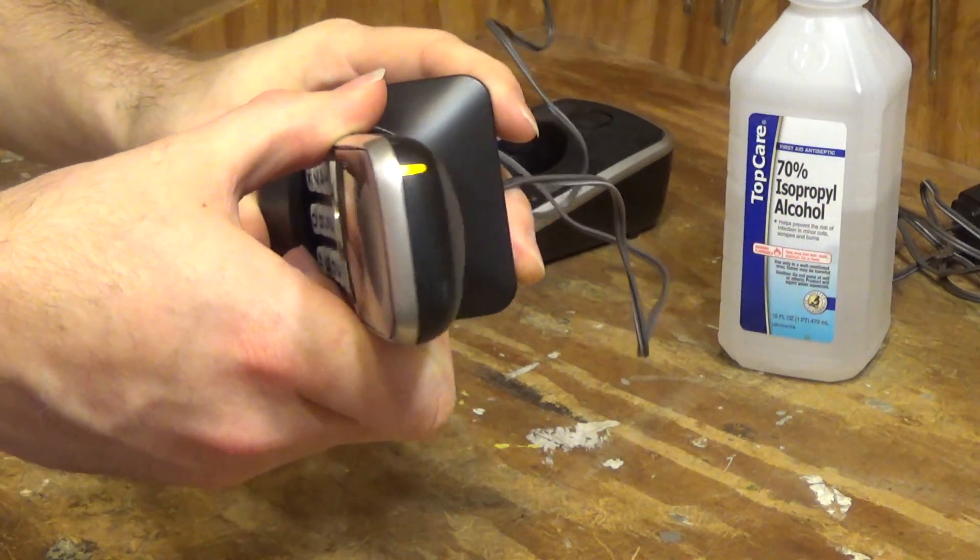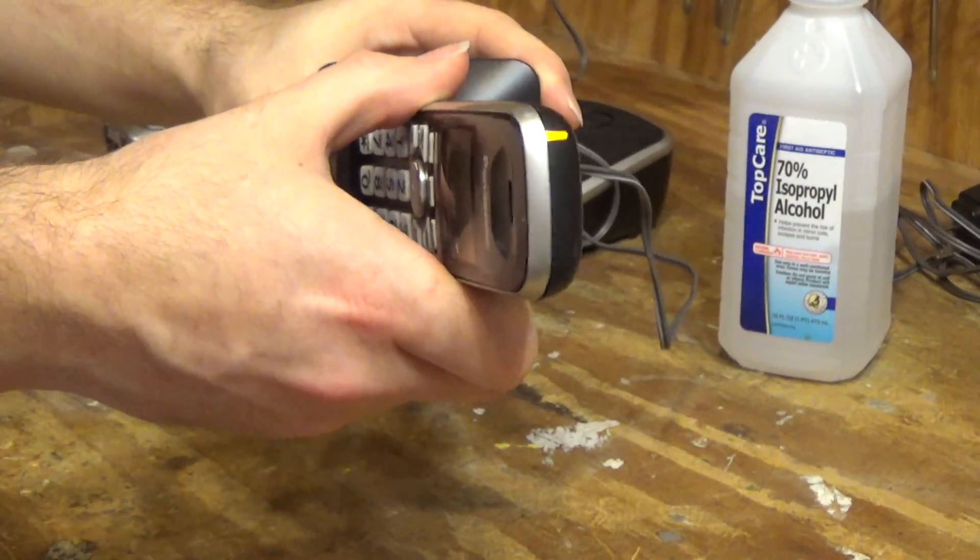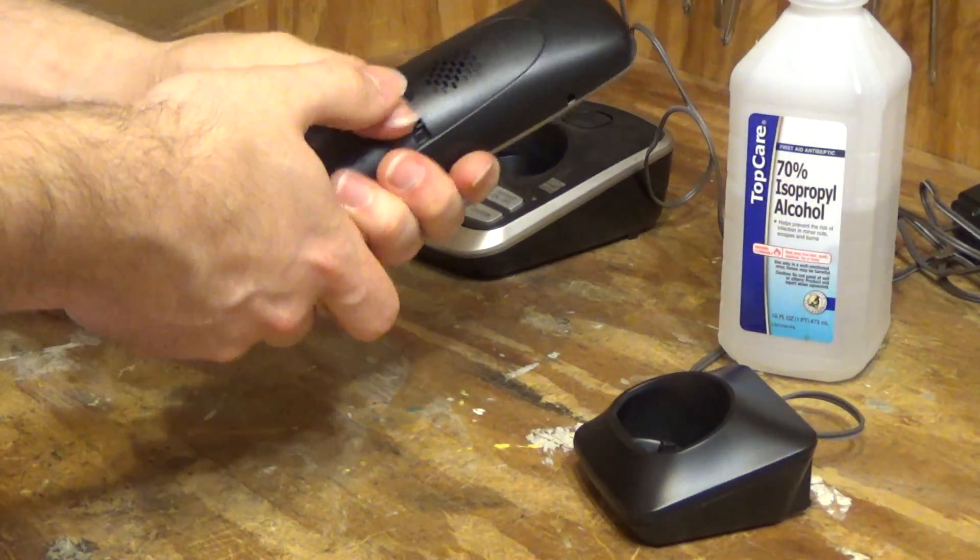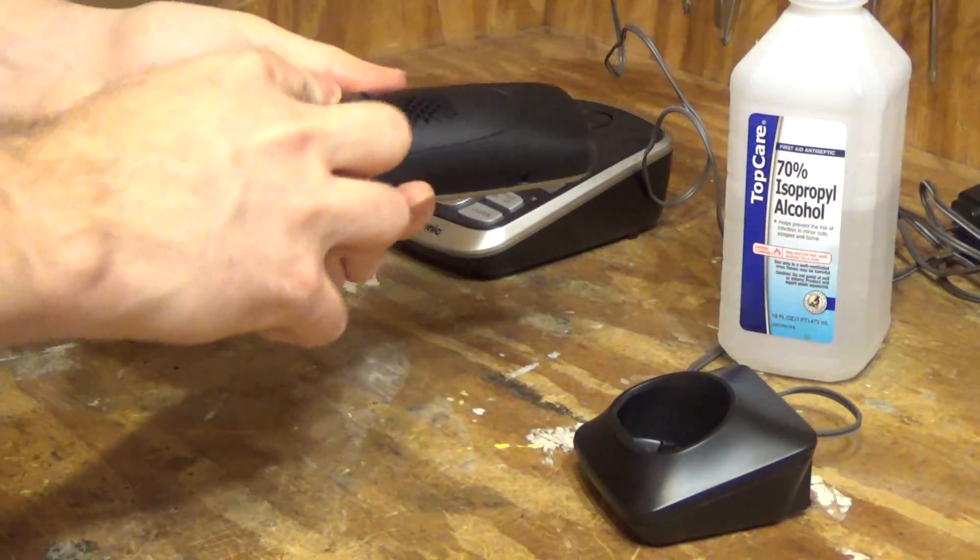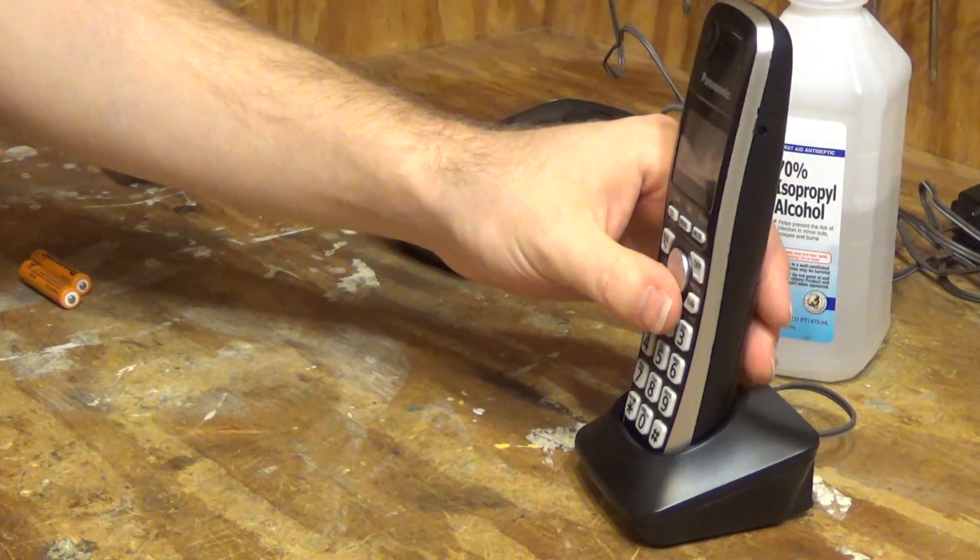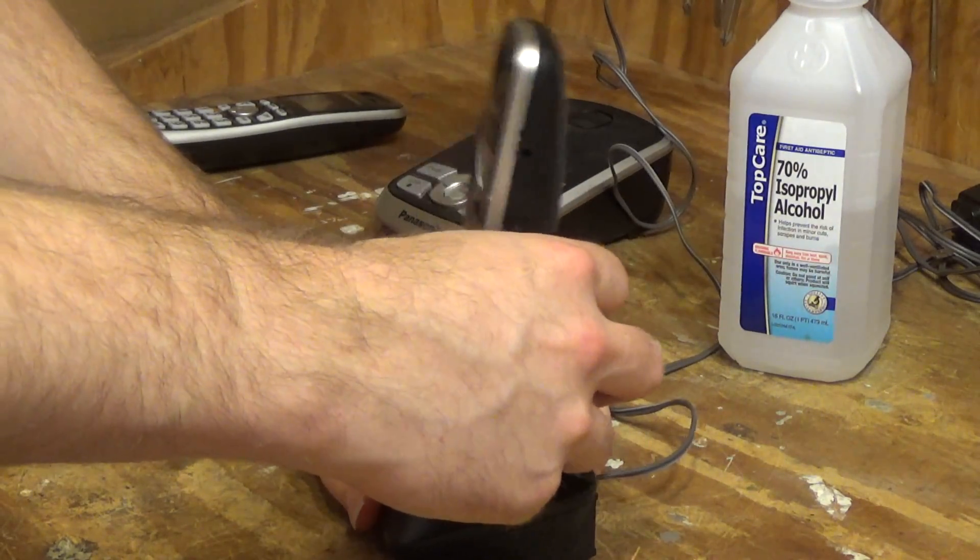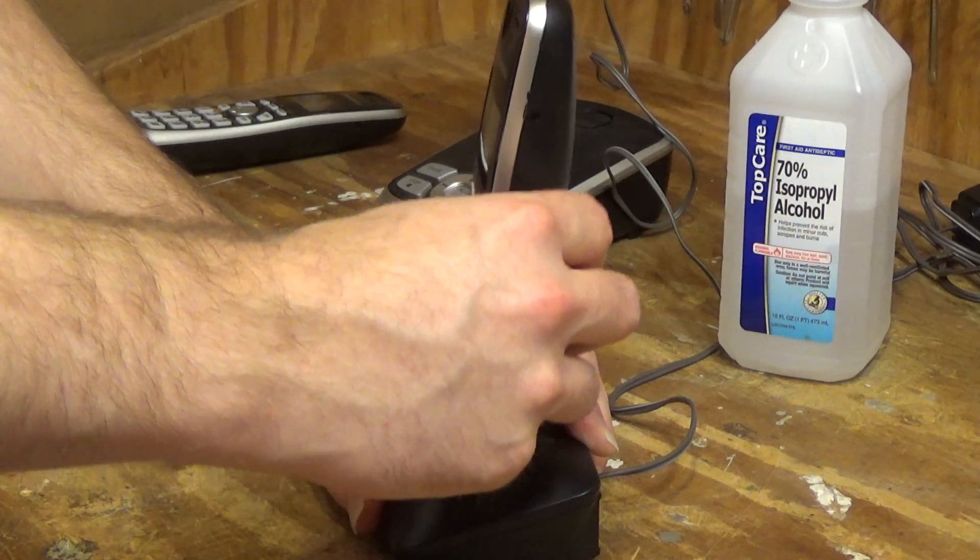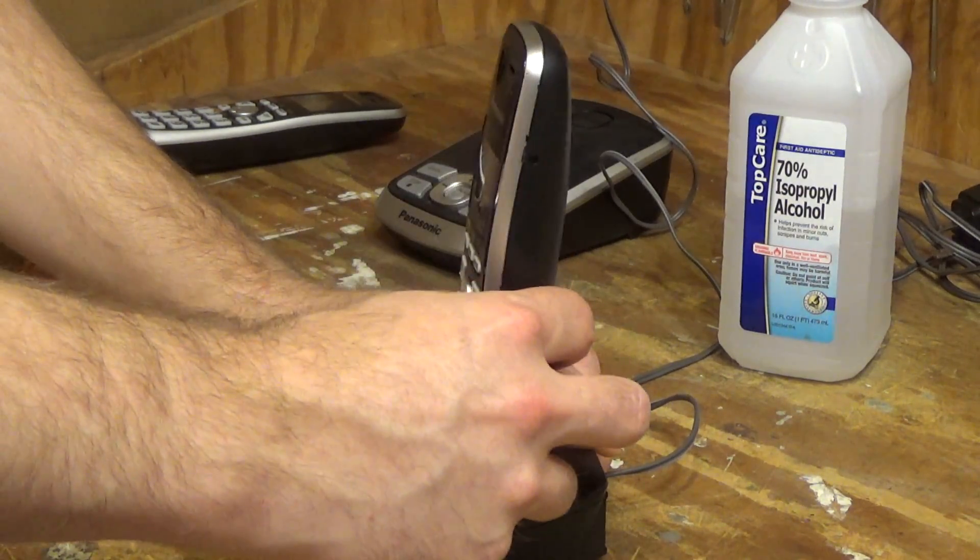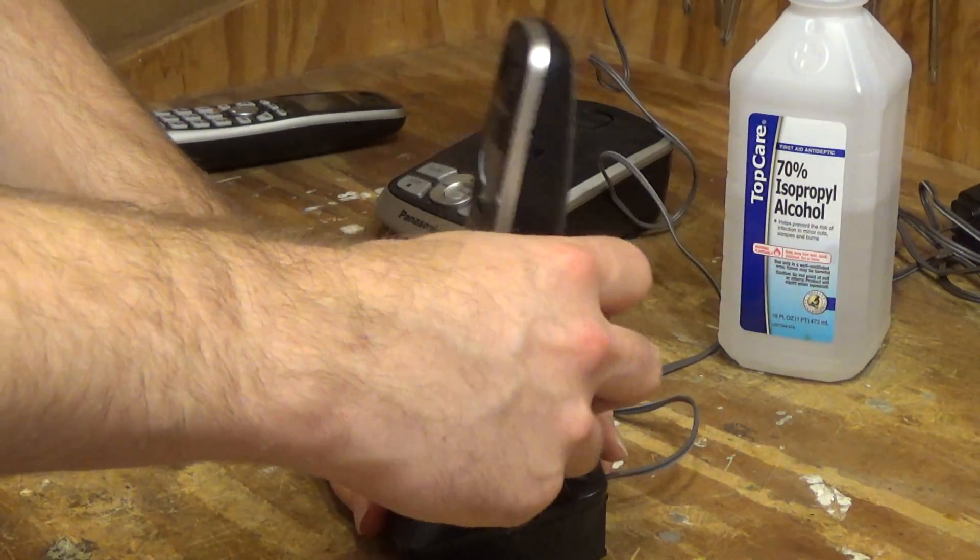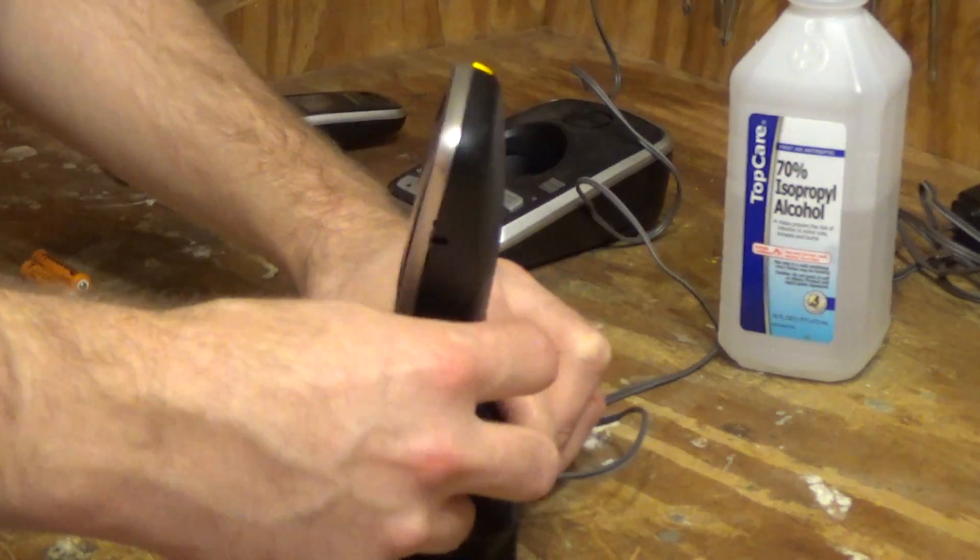Now you can see that the charge light is not flickering at all anymore. So that will lead me to believe that this problem has been resolved. So let's put some batteries in here. Get in there. Yeah, I'm pretty happy with this. This is showing absolutely no signs of not making the connection. You can see the charge light is on steady, which means it's making good contact.